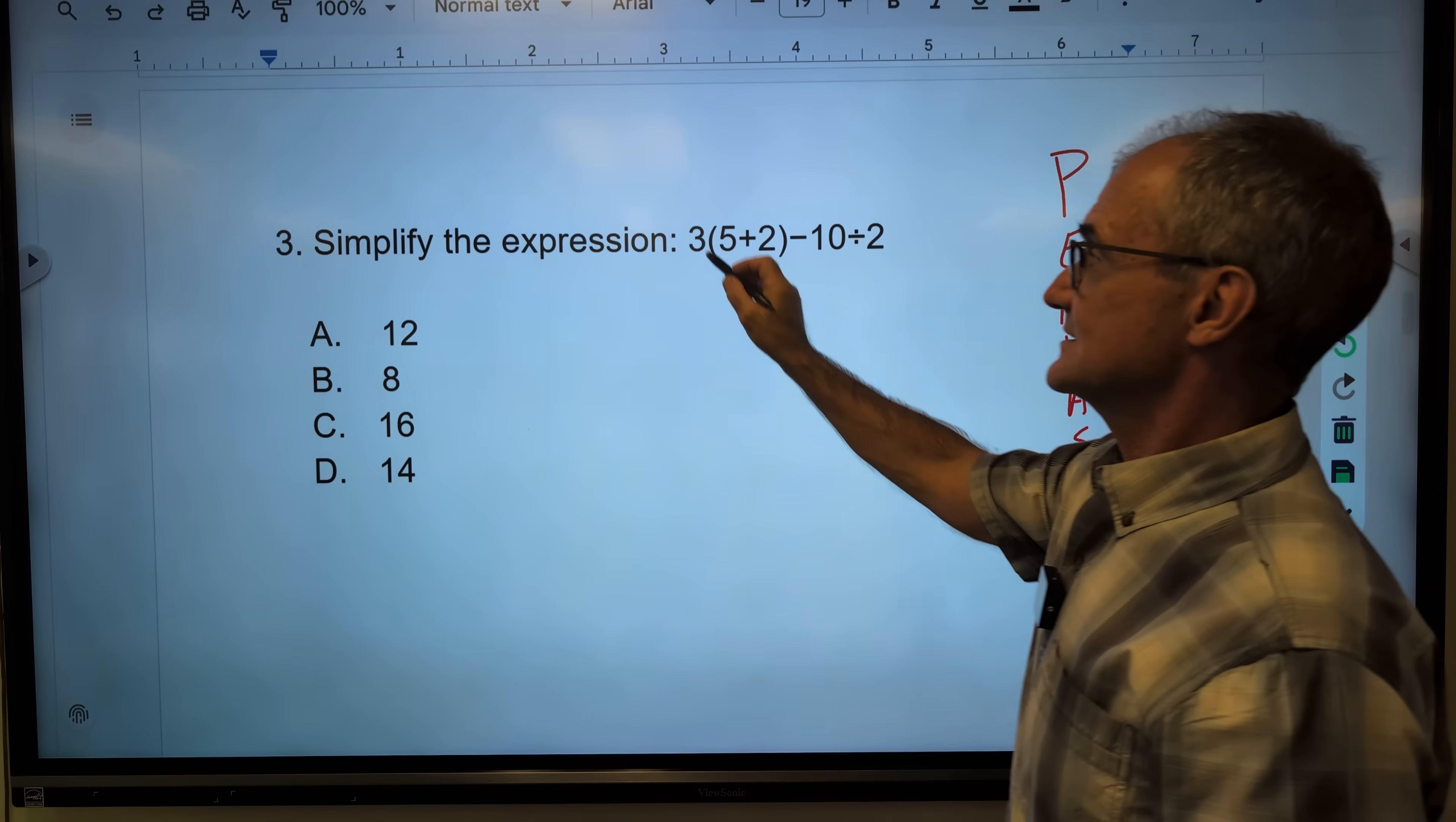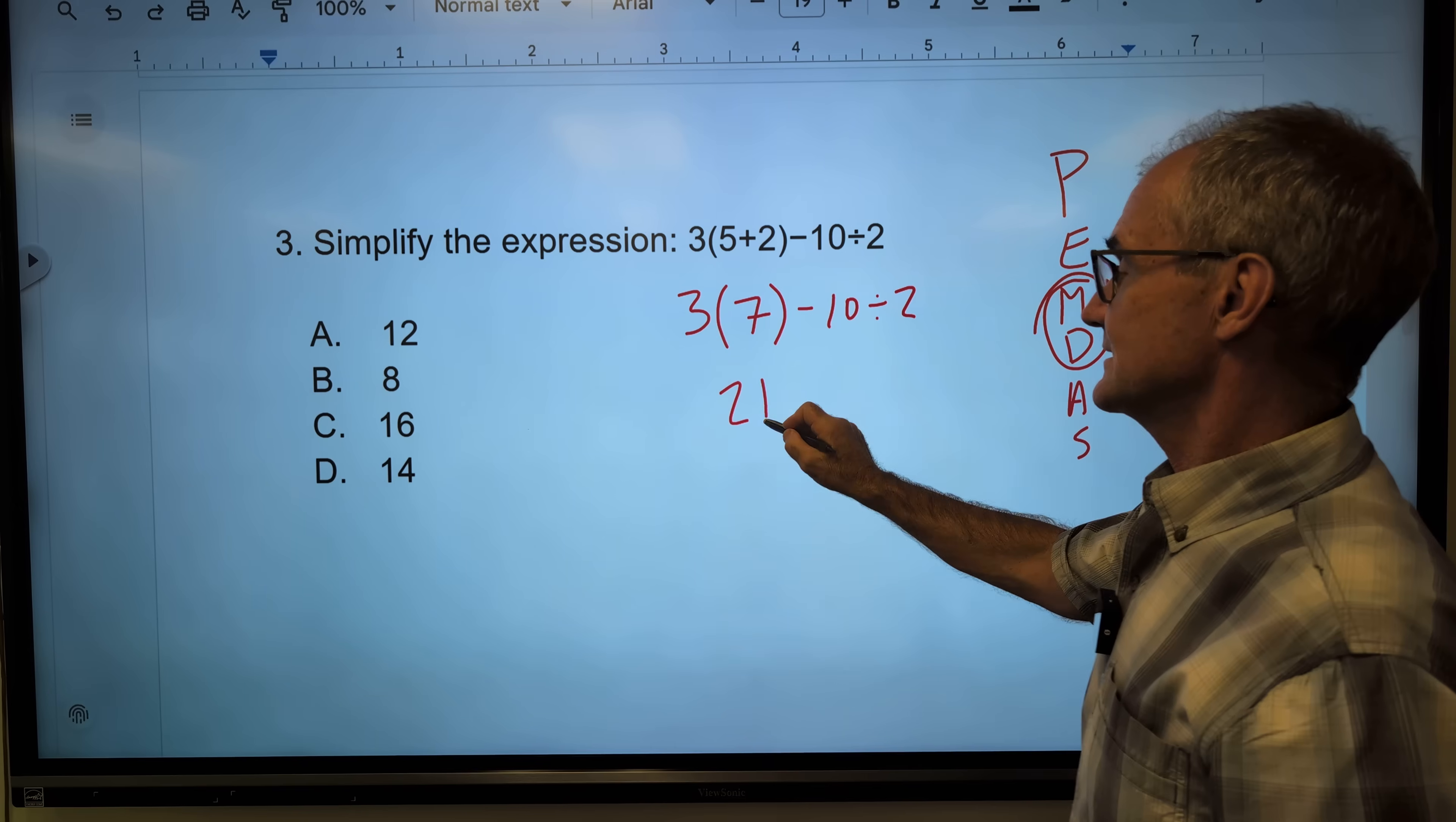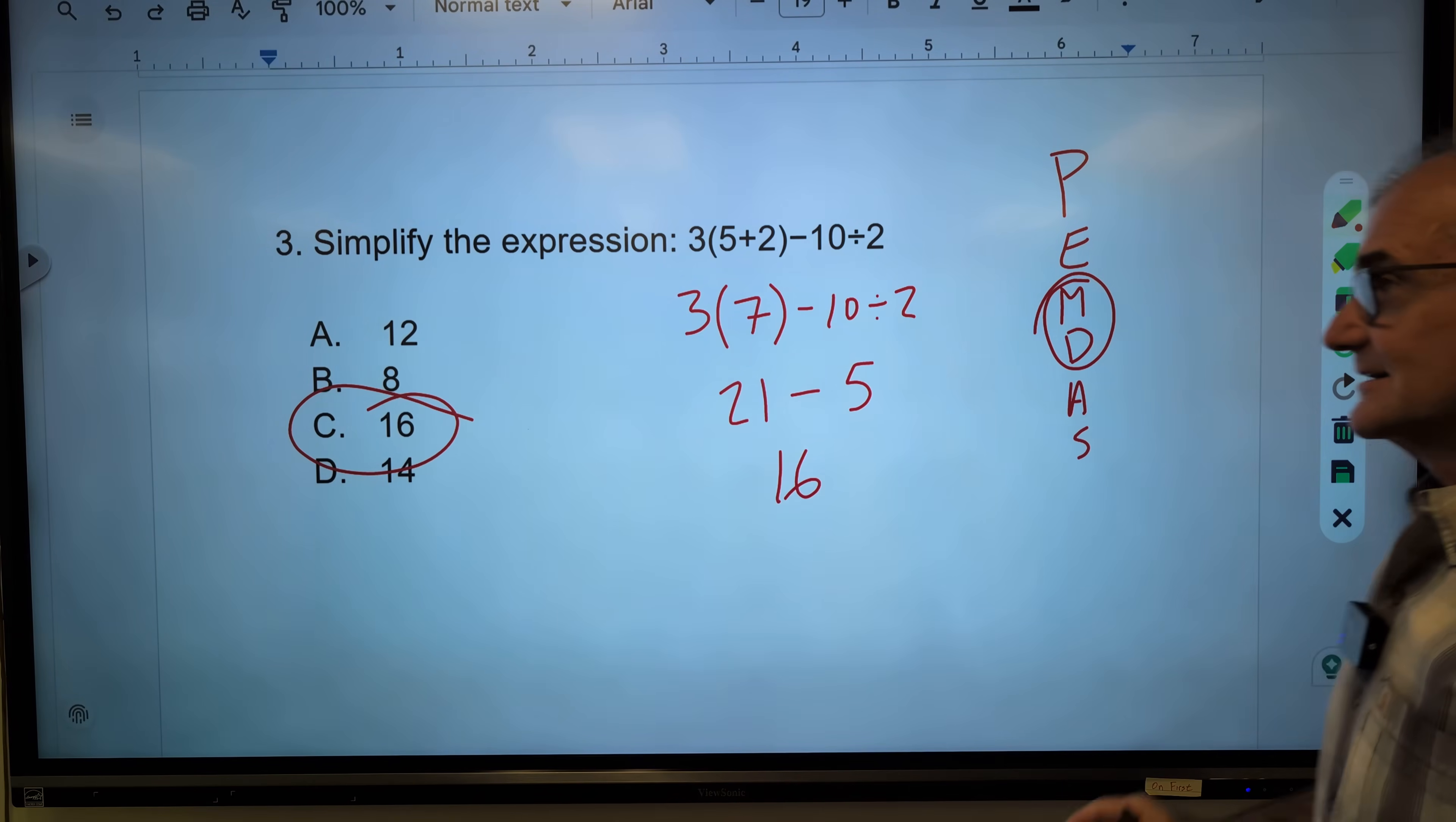First thing I need to do are my parentheses. I have that 3 out front. 5 plus 2 is 7 minus 10 divided by 2. Now that I've done my parentheses, there are no exponents. I've got to do my multiplication and division next from left to right. So 3 times 7 is 21. 10 divided by 2 is 5. I am now doing my addition and subtraction from left to right. 21 minus 5 is 16. Correct answer, answer C.